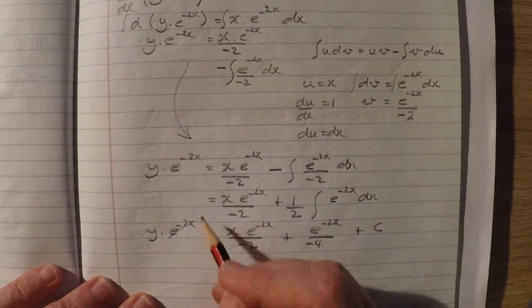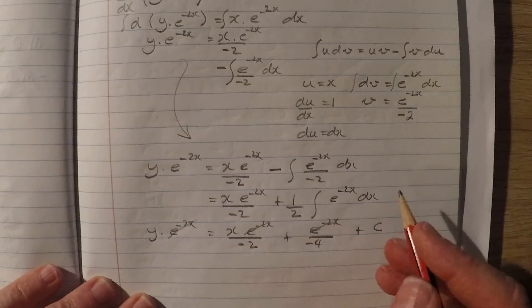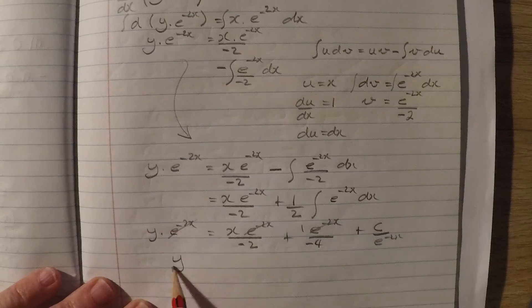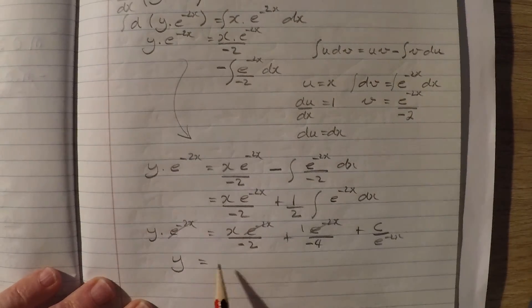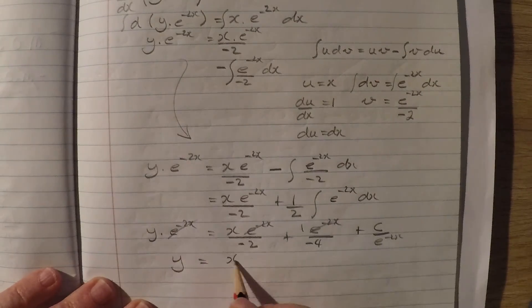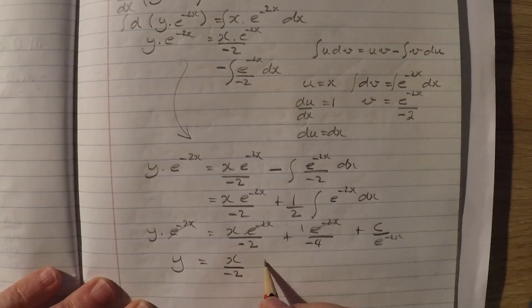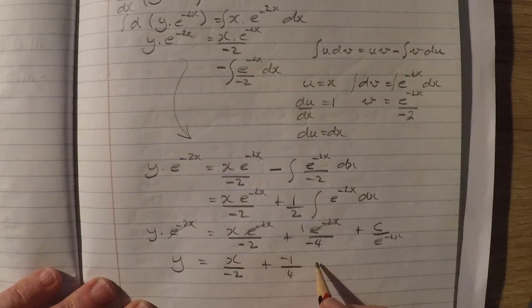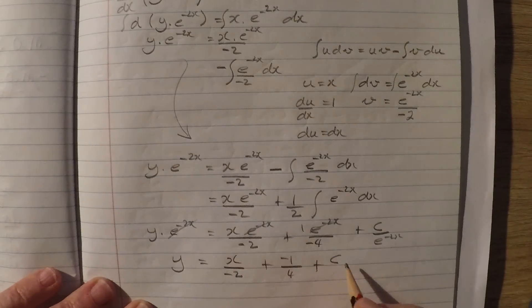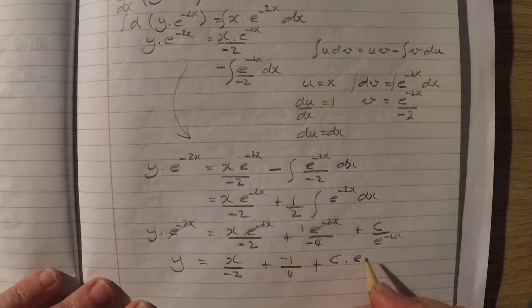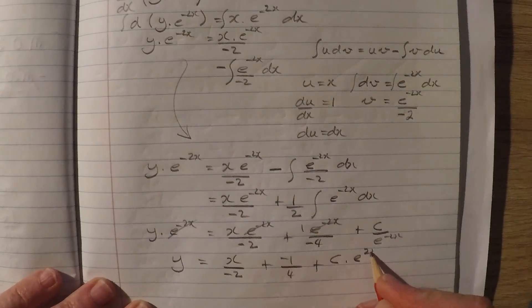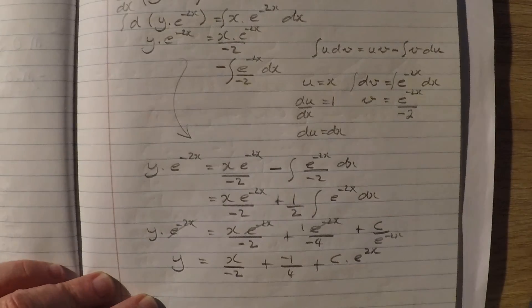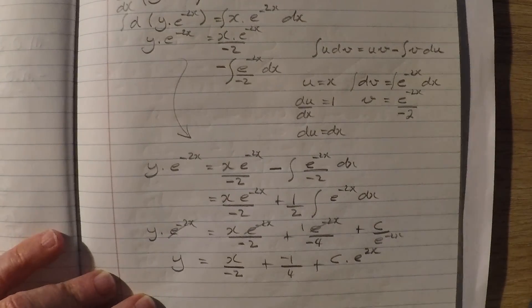So I could divide by e to the negative 2x, and I'm left with my general solution, y equals x over negative 2, plus 1 over negative 1 over 4, plus c. Now dividing by this would be the same as e to the positive 2x. And that's how we use an integrating factor to do an ordinary differential equation.